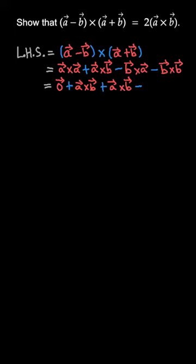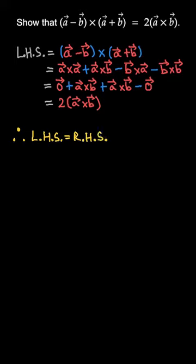And again, b × b will be zero as well. So we get twice of a × b, and hence LHS equals RHS. Thank you.